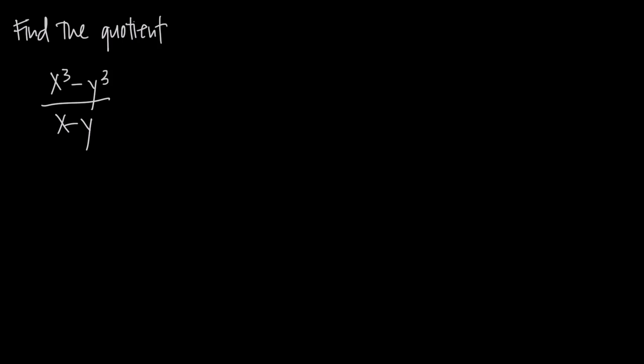In this video we're talking about long division of multivariable polynomials. We've already learned how to do long division with whole numbers and with single-variable functions, where we had only an x variable in the numerator and denominator. But now we have two variables in both the numerator and the denominator — x and y — and we can still do long division with polynomials, it's just a little bit trickier.